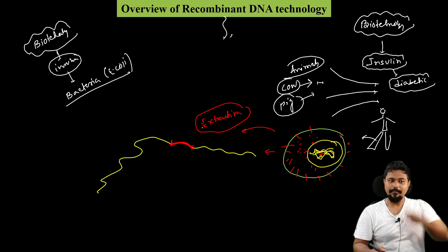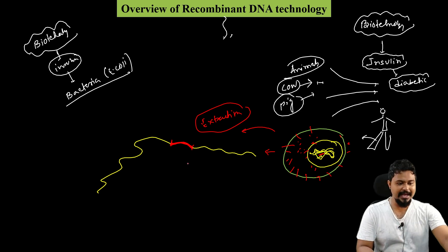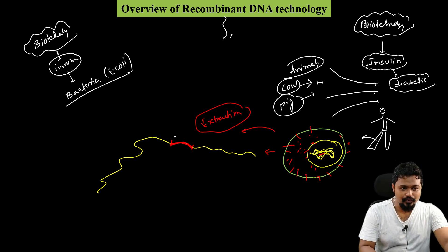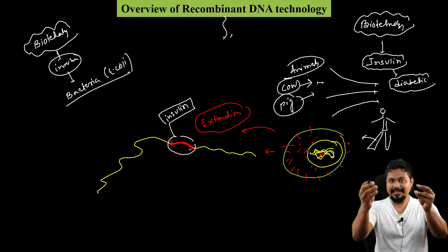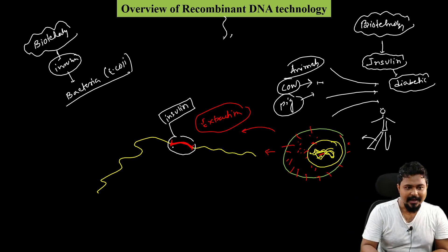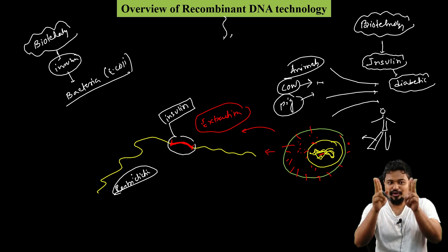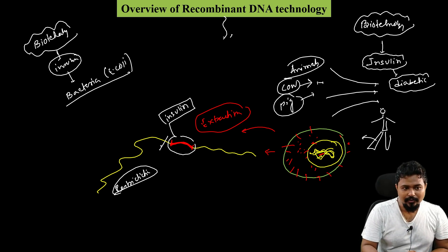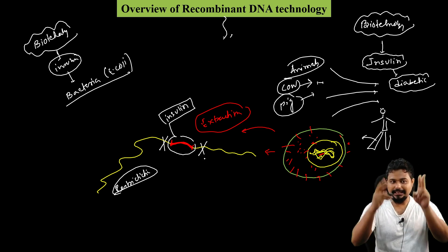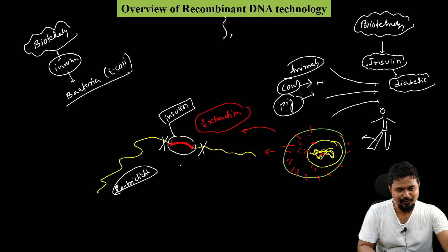The next step involves cutting out the insulin gene from the DNA using restriction enzymes. Restriction enzymes act like molecular scissors — I discussed restriction enzymes in the last class. These molecular scissors cut out the specific insulin gene from the DNA.